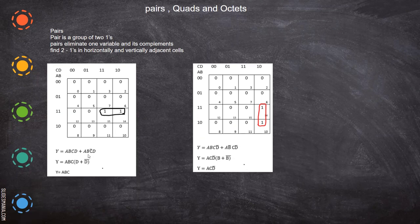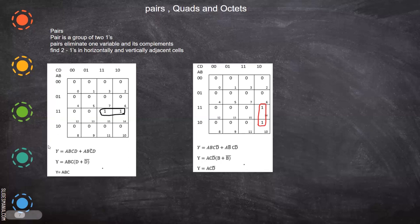Let us take an equation A, B, C, D and A, B, C-bar, D-bar. How do we draw a K-map for this? First, since there are four variables — A, B, C, D — you definitely have to go for a four-variable K-map. So the first step is to identify how many variables are in the equation, and based on that, draw either a two-variable, three-variable, or four-variable K-map. So we have drawn a four-variable K-map with 0,0 / 0,1 / 1,1 / 1,0 on the AB side and CD side.